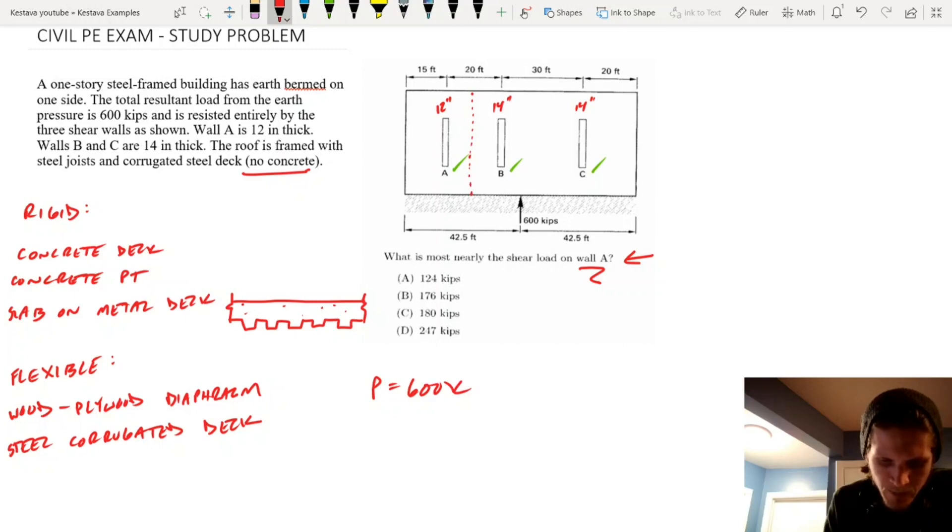If we go up to our diaphragm here in our plan view, this, we'll call that W, is going to be our trip width for wall A. And that is just, W is going to equal 15 feet, because that's everything on this side.